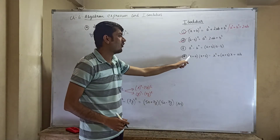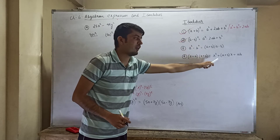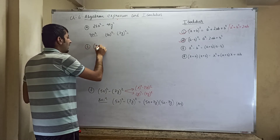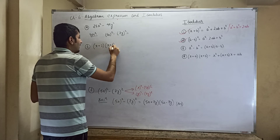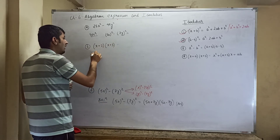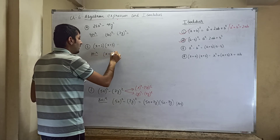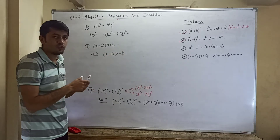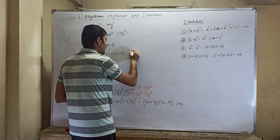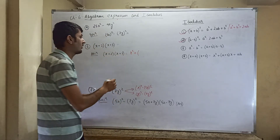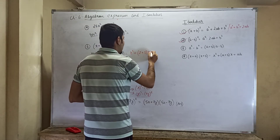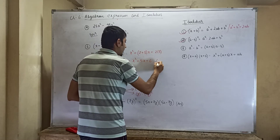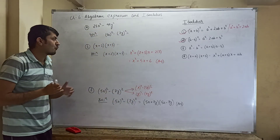Now the last identity: (x + a)(x + b) equals x squared plus (a + b)x plus ab. Suppose they give you (x + 2)(x + 3). This is of the form (x + a)(x + b), so using the formula: x squared plus (2 + 3)x plus (2 × 3), which gives x squared plus 5x plus 6. That is your required answer.